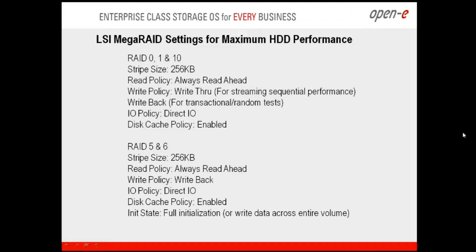The read policy for RAID 0, 1, and 10 is to have Always Read Ahead enabled — we'll show this in the GUI as well so you can see where these settings are configured. The write policy — Write Through — is recommended for streaming sequential performance. It's always best to have a battery backup associated with your RAID controller.